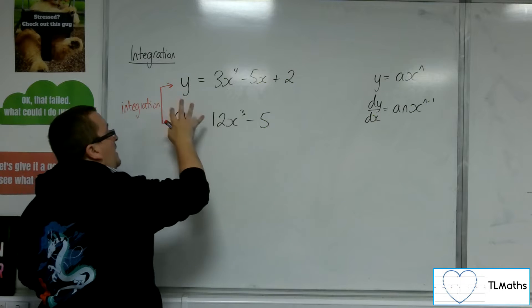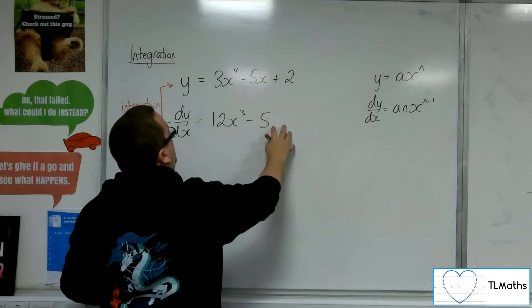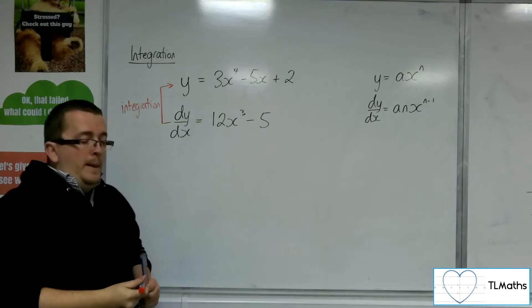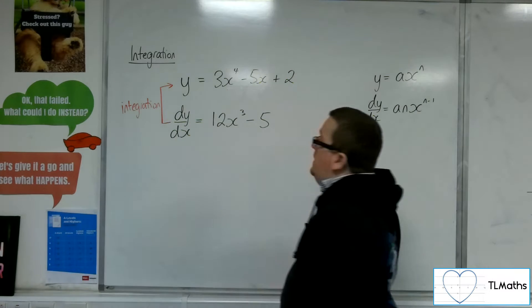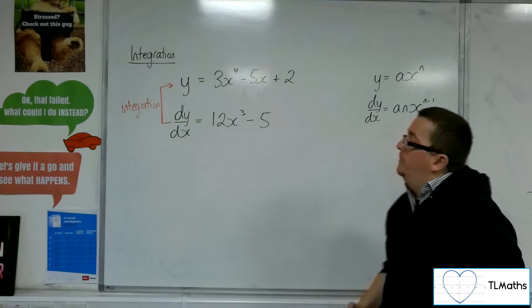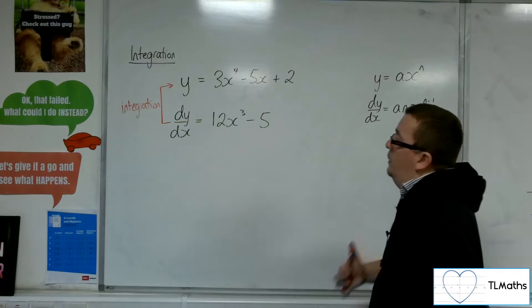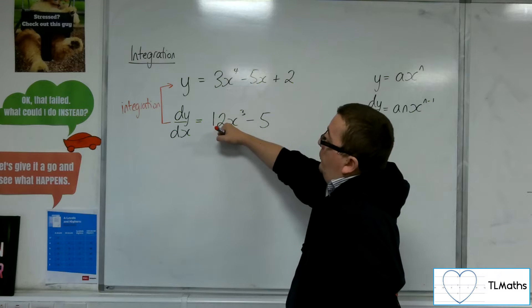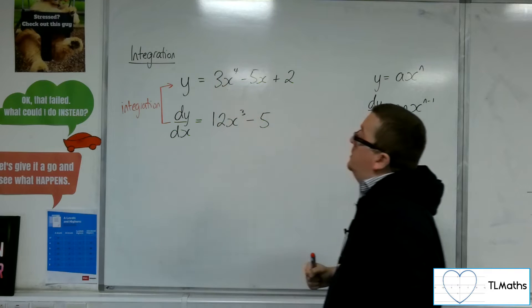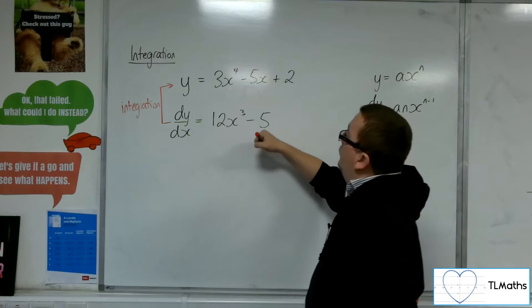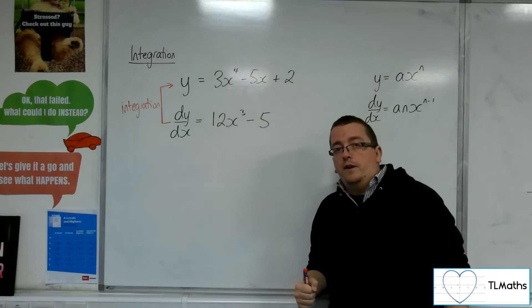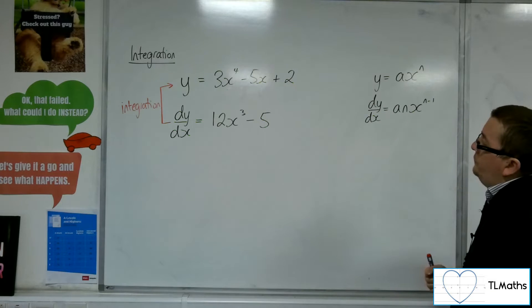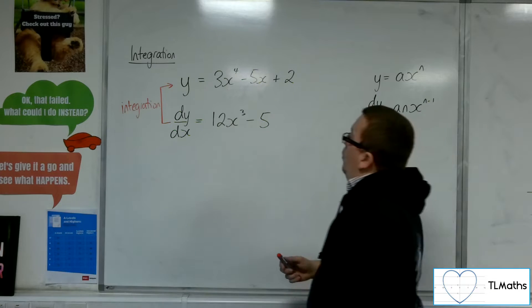This process of getting from dy by dx equals back to y equals. This is a differential equation. OK, so let's have a look. We know that the 12x cubed has got to get to 3x to the 4 and we know that the minus 5 has got to get back to minus 5x. OK, so what's happening?